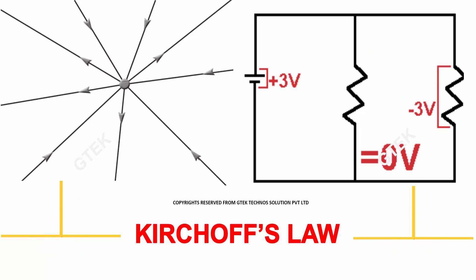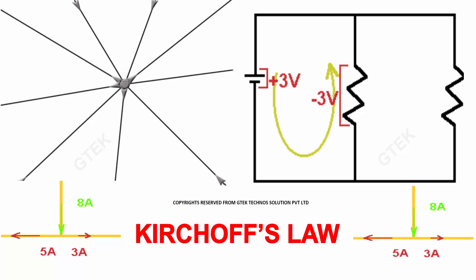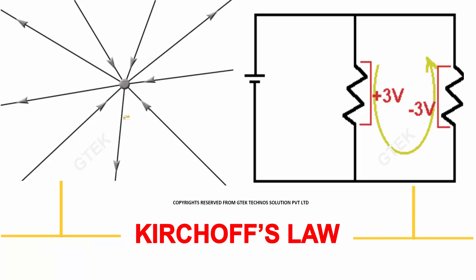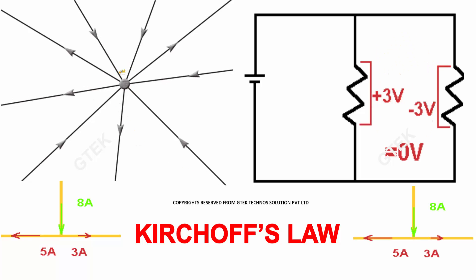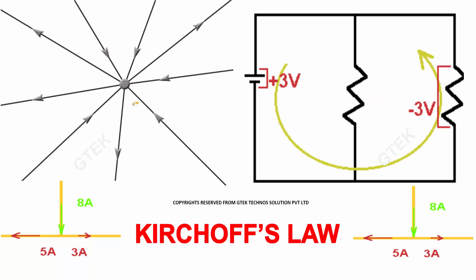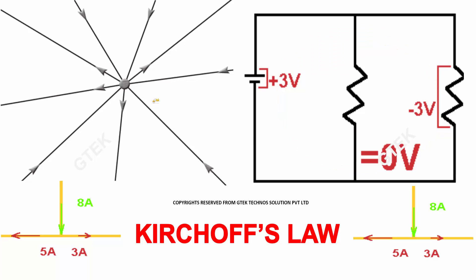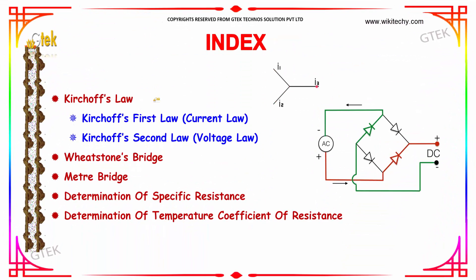We will see Kirchhoff's law, which is one of the most interesting laws defining how current is passed at a junction and what its value could be. The topics we are going to cover are: Kirchhoff's first law, second law, followed by the Wheatstone bridge, meter bridge, and determination of specific resistance and temperature coefficient of resistance.